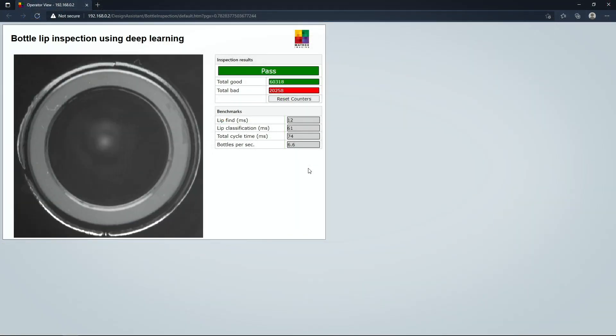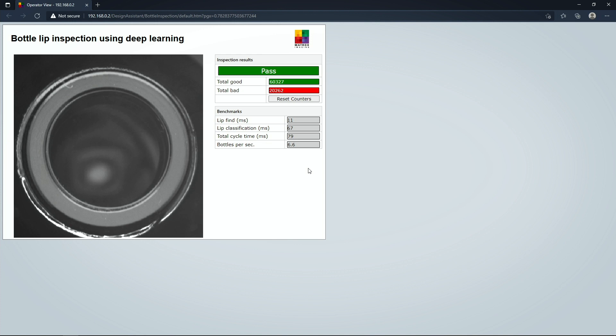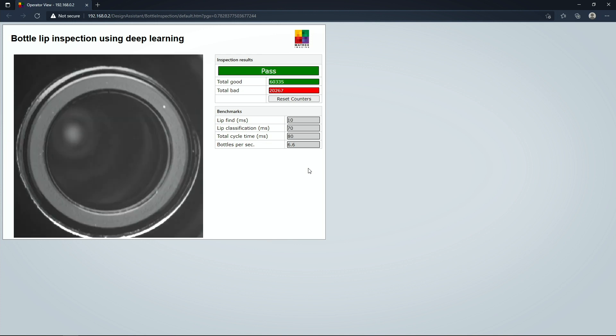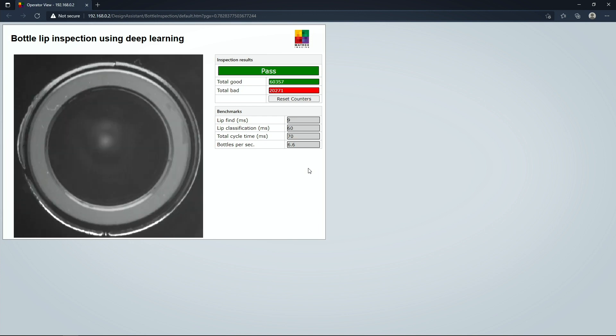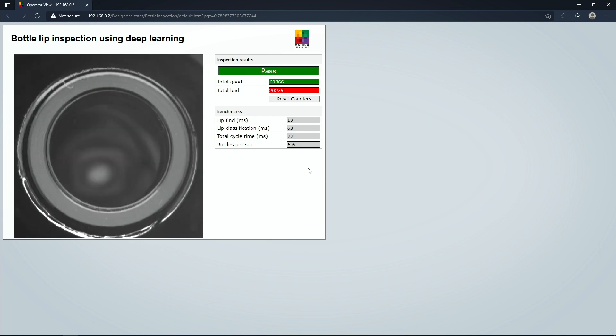This is the operator view being displayed from the video output of the Matrox Iris GTX. As you can see, no good bottles have some kind of defect or flaw on the lip, whereas okay bottles do not.